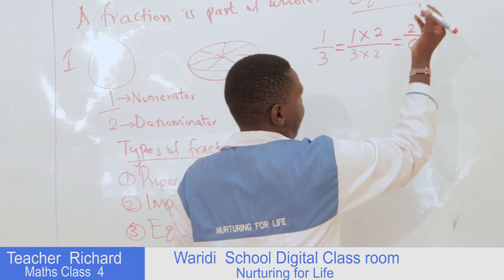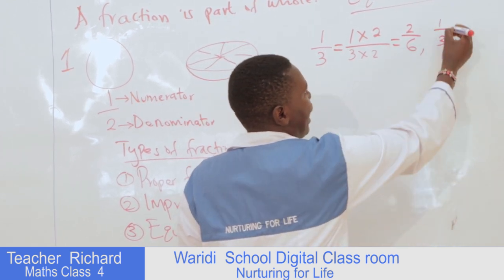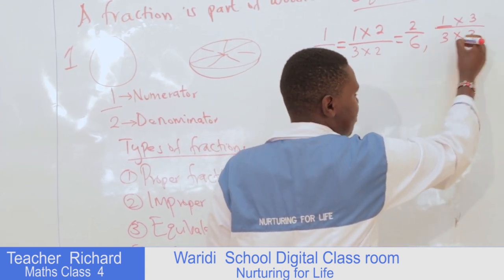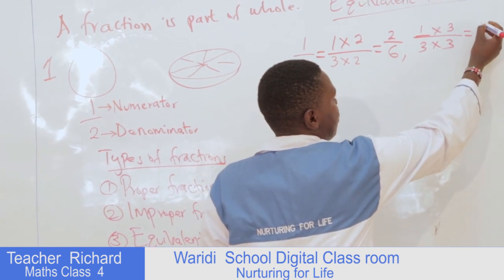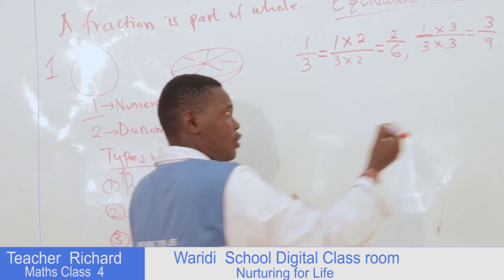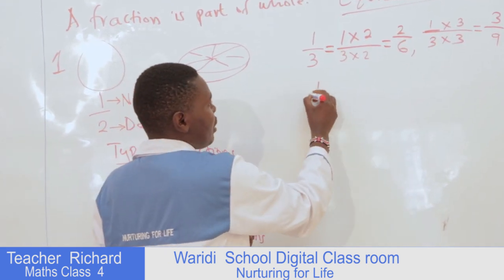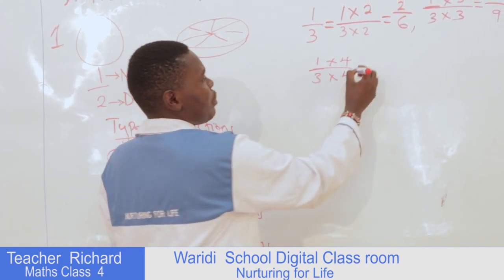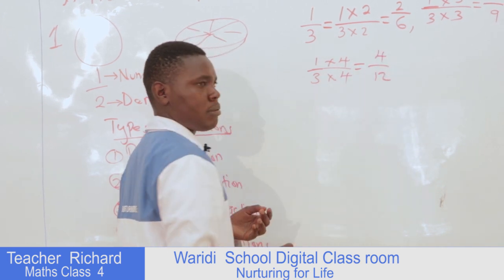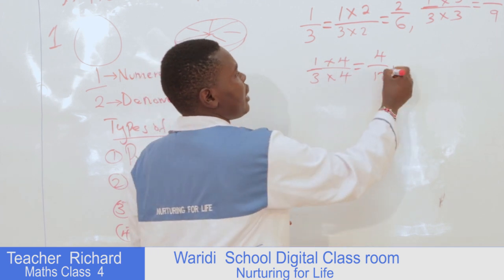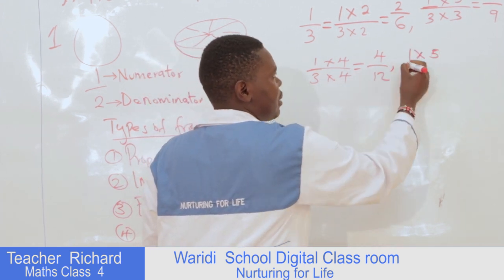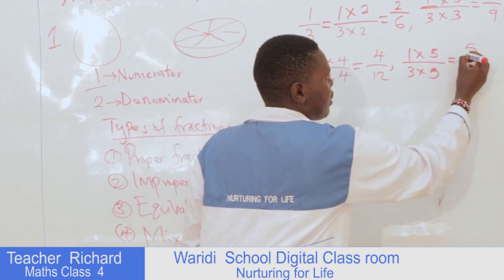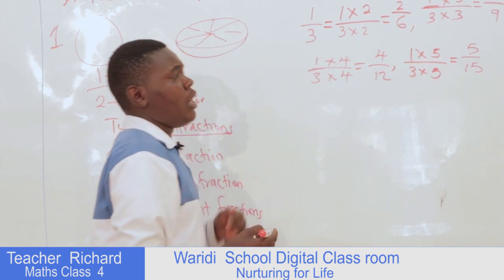If I take the same fraction one-third and multiply by a different number — three — and on the denominator I multiply by the same number three, I will get a different fraction: three out of nine. I can continue the thread; I can take one over three, times four on the numerator and times four on the denominator. What I'm going to get is four out of twelve. I can continue again: one times five over three times five gives five out of fifteen.